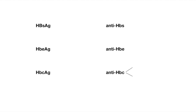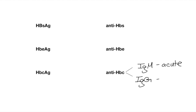The three antigens we talked about are just some of the things we can find on lab results. We can also find different antibodies that correspond to those antigens — so we have surface antibodies, E antibodies, and core antibodies, which can be broken up into IgM and IgG. This is important to differentiate because the IgM antibody corresponds to a more acute infection, while the IgG antibody indicates a more chronic infection.